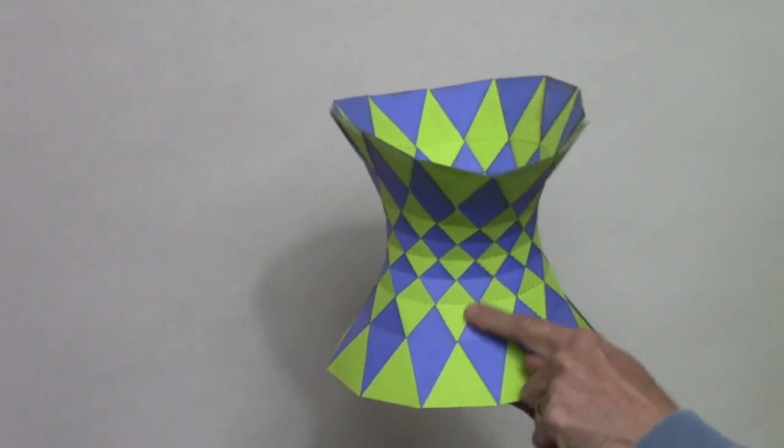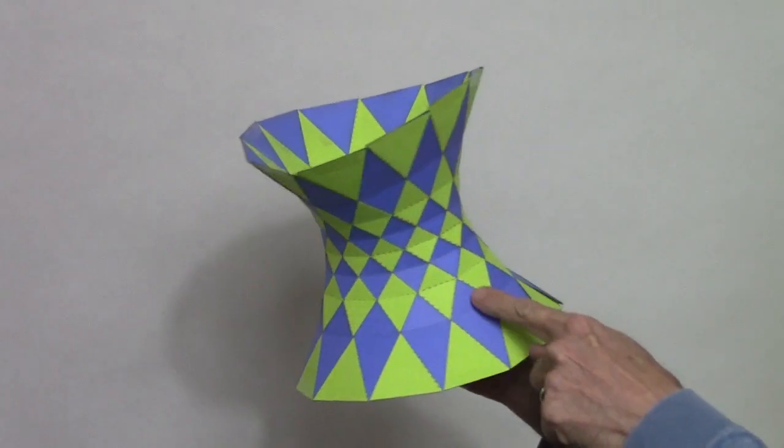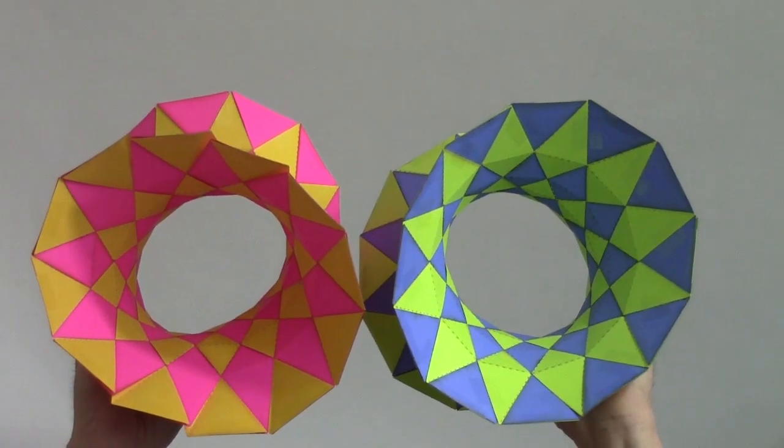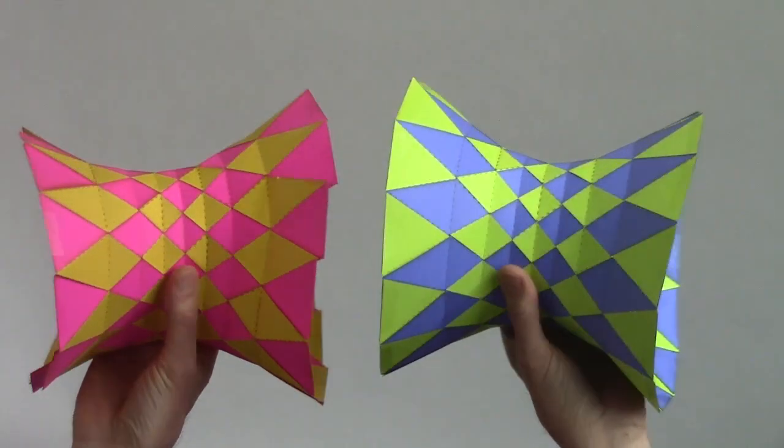The edges of the strips will wind up following the same path in space as the sticks, the ruling lines. Here you go. I have to say, that's a pretty nice hyperboloid too.